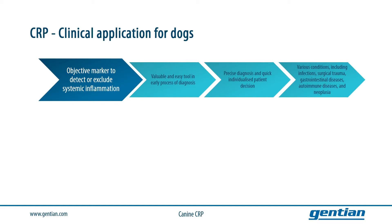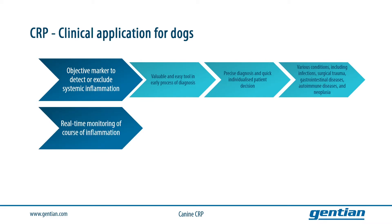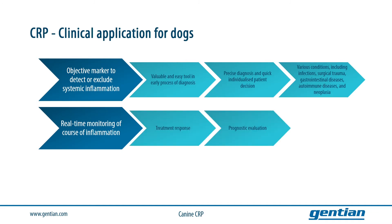As mentioned, CRP is used in the early diagnosis process, but it is also very important in monitoring. CRP levels will track the real-time course of the inflammation due to the short half-life of the protein, and therefore CRP is very useful for monitoring treatment response and can even give some prognostic evaluation potential, for example when monitoring patients after surgery where they are especially prone to infections.